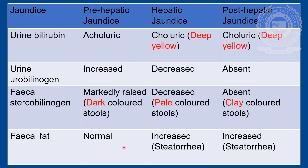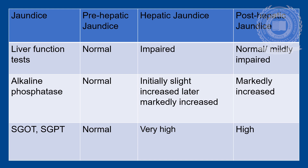Fecal fat levels are normal in pre-hepatic jaundice but increased in hepatic as well as post-hepatic jaundice, giving rise to a condition called steatorrhea. In this condition, bulky, pale, greasy and foul-smelling faeces are passed out because of inadequate emulsification and absorption of fats. Liver function tests are normal in pre-hepatic jaundice, impaired in hepatic jaundice, and may be normal or mildly impaired in post-hepatic jaundice. Alkaline phosphatase levels are normal in pre-hepatic jaundice, initially slightly increased but later markedly increased in hepatic jaundice, and markedly increased in post-hepatic jaundice. SGOT and SGPT levels are normal in pre-hepatic jaundice, very high in hepatic jaundice, and high in post-hepatic jaundice.